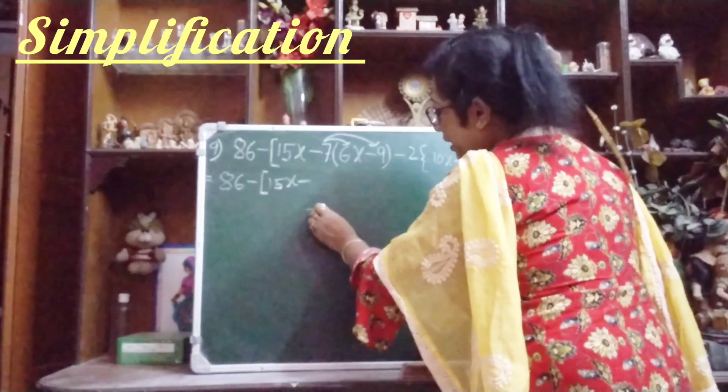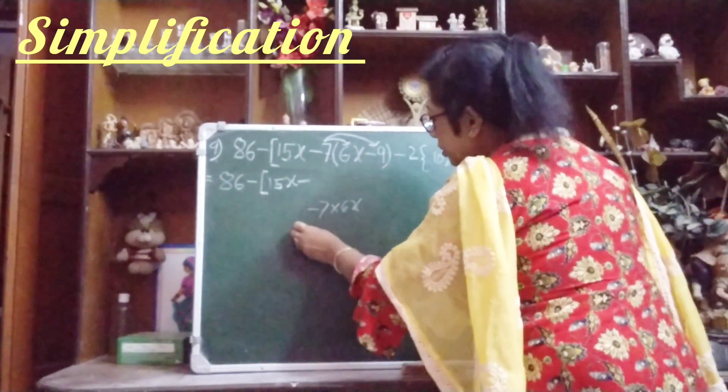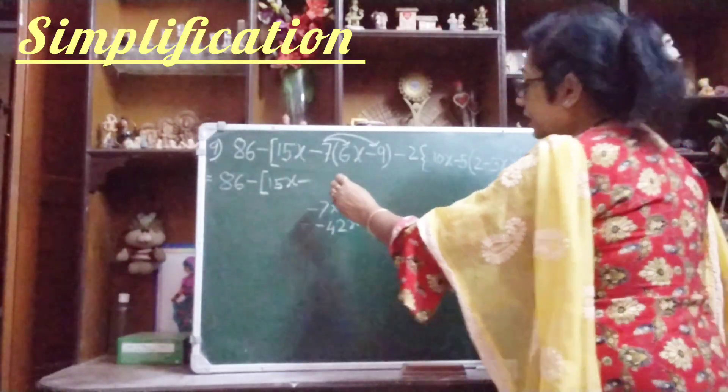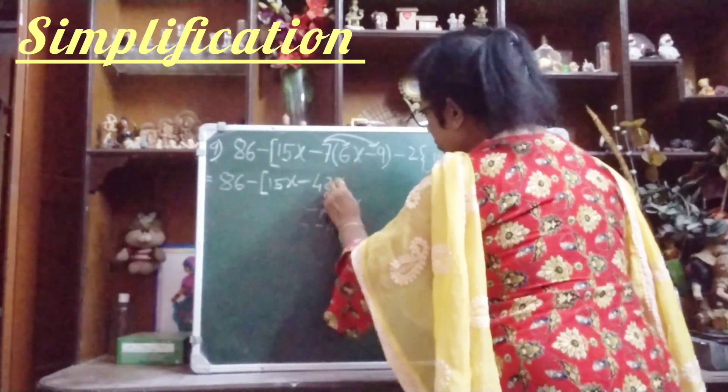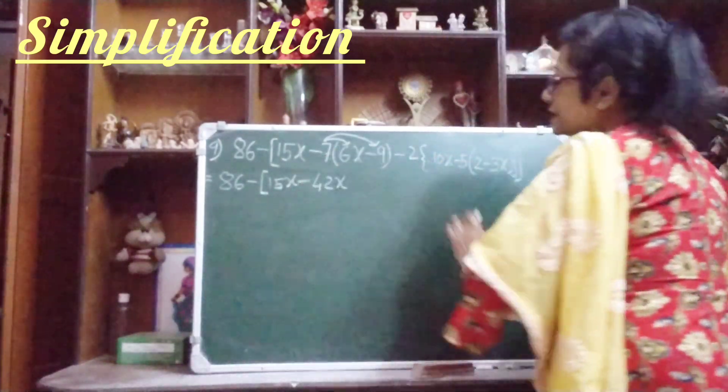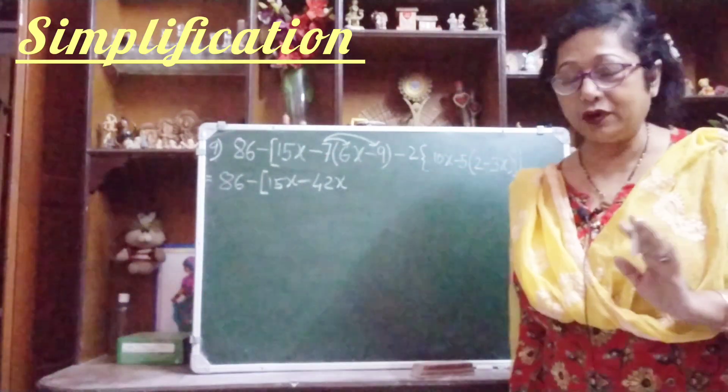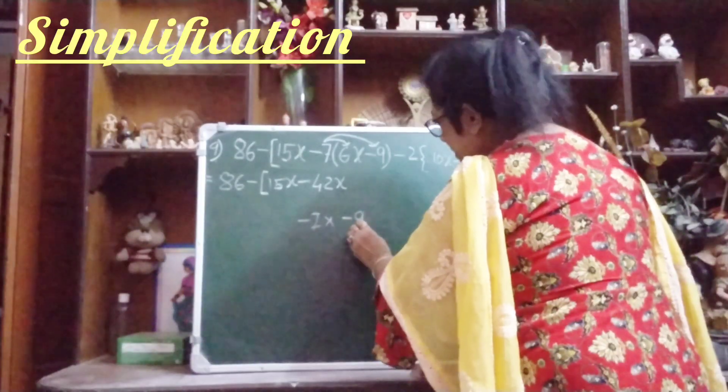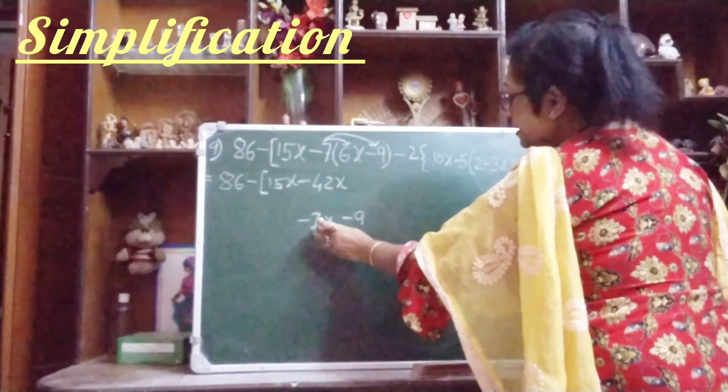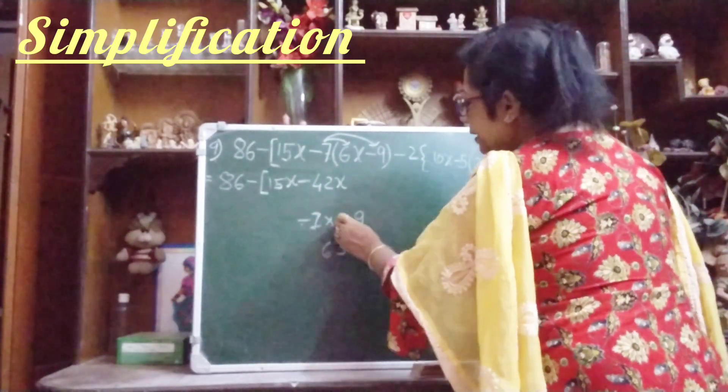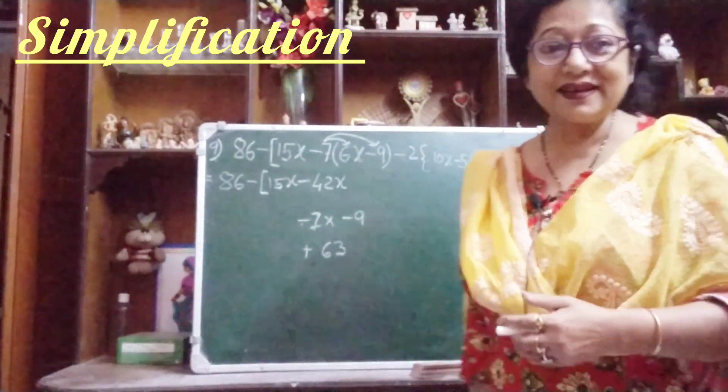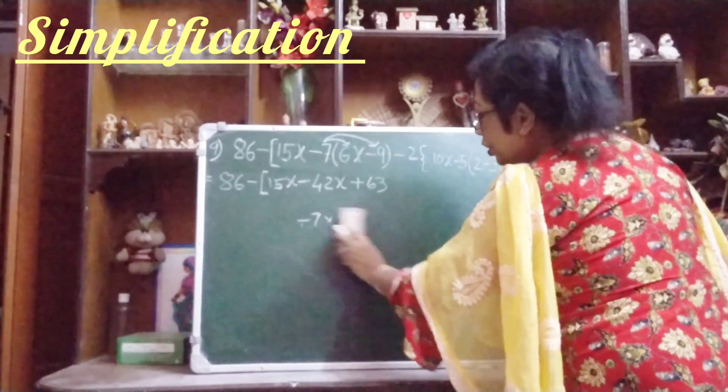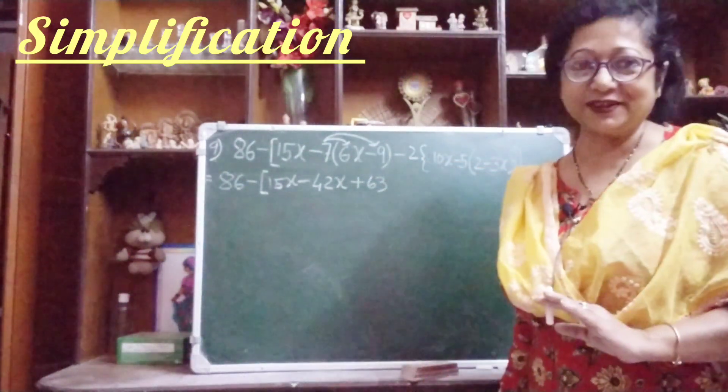How it will be? Minus 7 into 6x, so what you will get? Minus 42x. So let us write here, minus 42x. Now you see children that minus 7, we will multiply with minus 9. Be careful. So minus 7 into minus 9, 7 times 9 is 63, minus minus plus, so what will come? Plus 63. By mistake also, don't write minus 63, otherwise your full sum will go wrong.